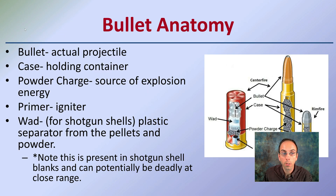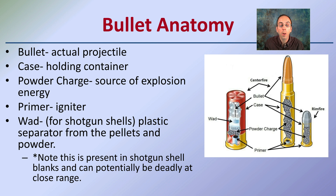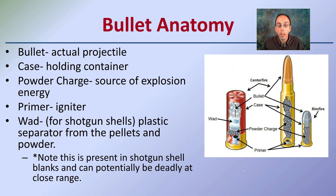The bullet anatomy is important to understand. The bullet is the actual projectile — it's the point that's being fired. The case is the holding container. The powder or charge is the source of the explosion energy. The primer is the igniter — that's what initiates the whole process. The wad, for shotgun shells, is a plastic separator between the pellets and the powder, located here.